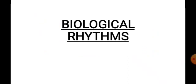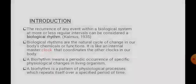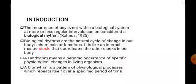What is biological rhythm? 'Bio' means life and 'rhythm' means periodic recurrence of an event. So the recurrence of an event — whether it is a physiological change or a behavioral change — at regular intervals of time is known as biological rhythm. The repetitive pattern of physiological processes over a specified period of time is also called biological rhythm.